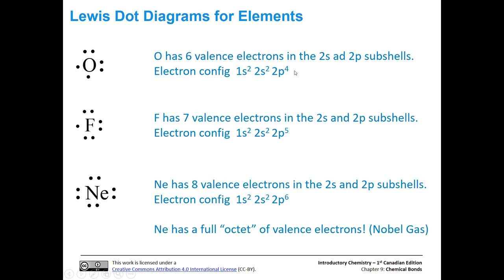Oxygen has six valence electrons: two paired, two paired in a p orbital, and two unpaired electrons. Fluorine has a similar situation — paired, paired, paired, and one unpaired in one of the 2p orbitals. Neon shows eight valence electrons all the way around, representing a full octet. Notice that fluorine is missing one valence electron — if it can share an electron with another atom, it can achieve a noble gas configuration like neon. That's the goal.